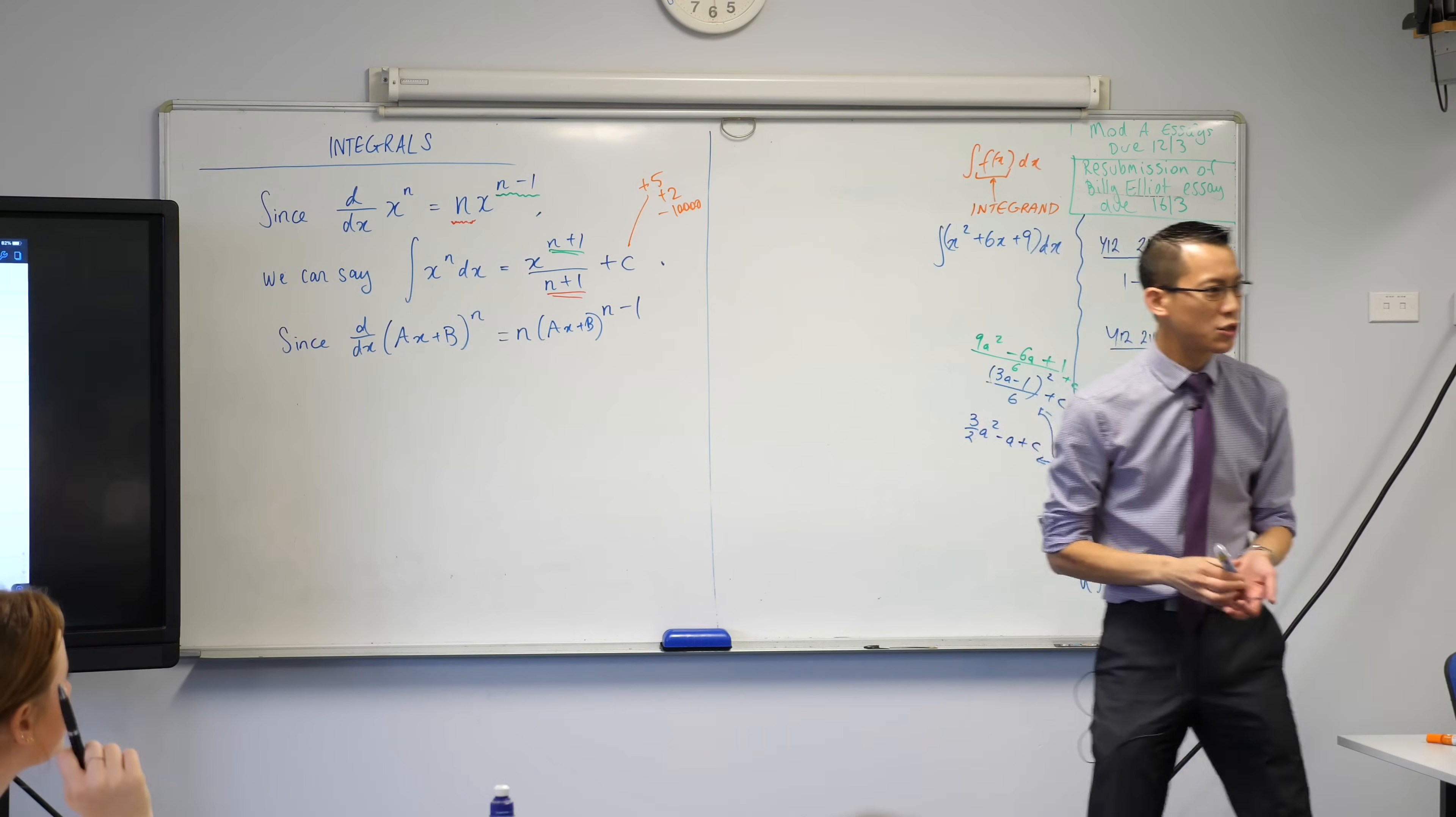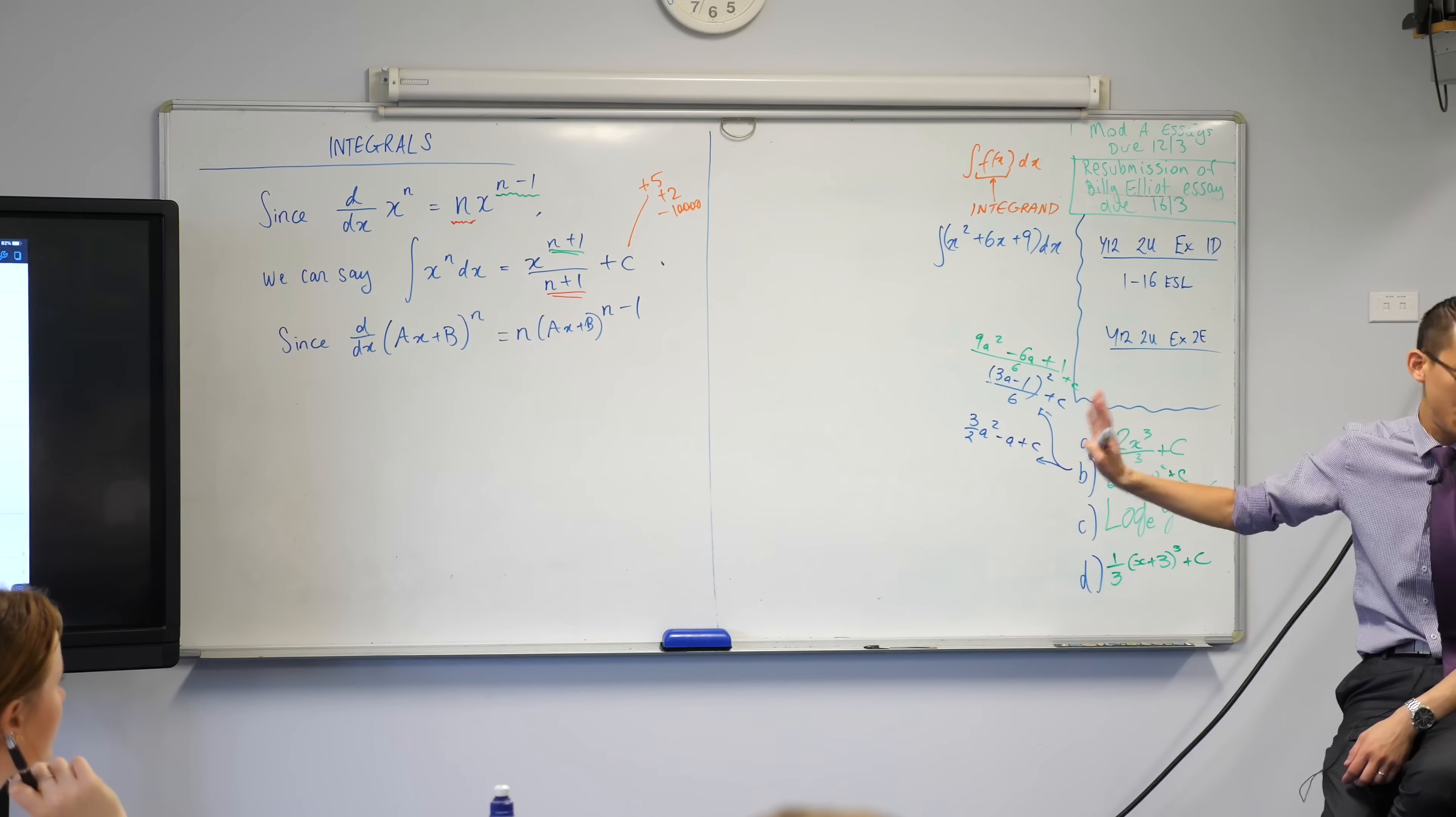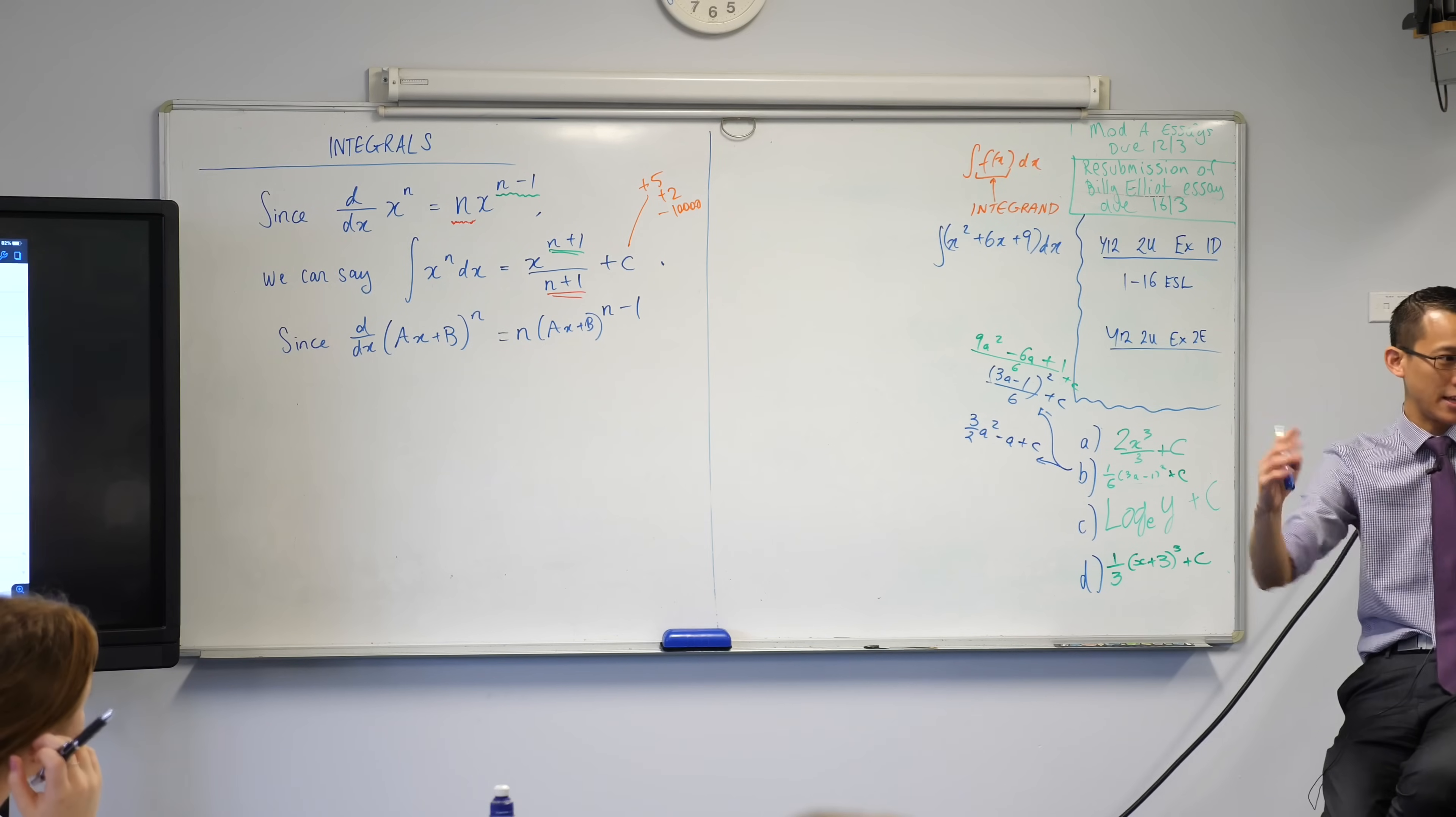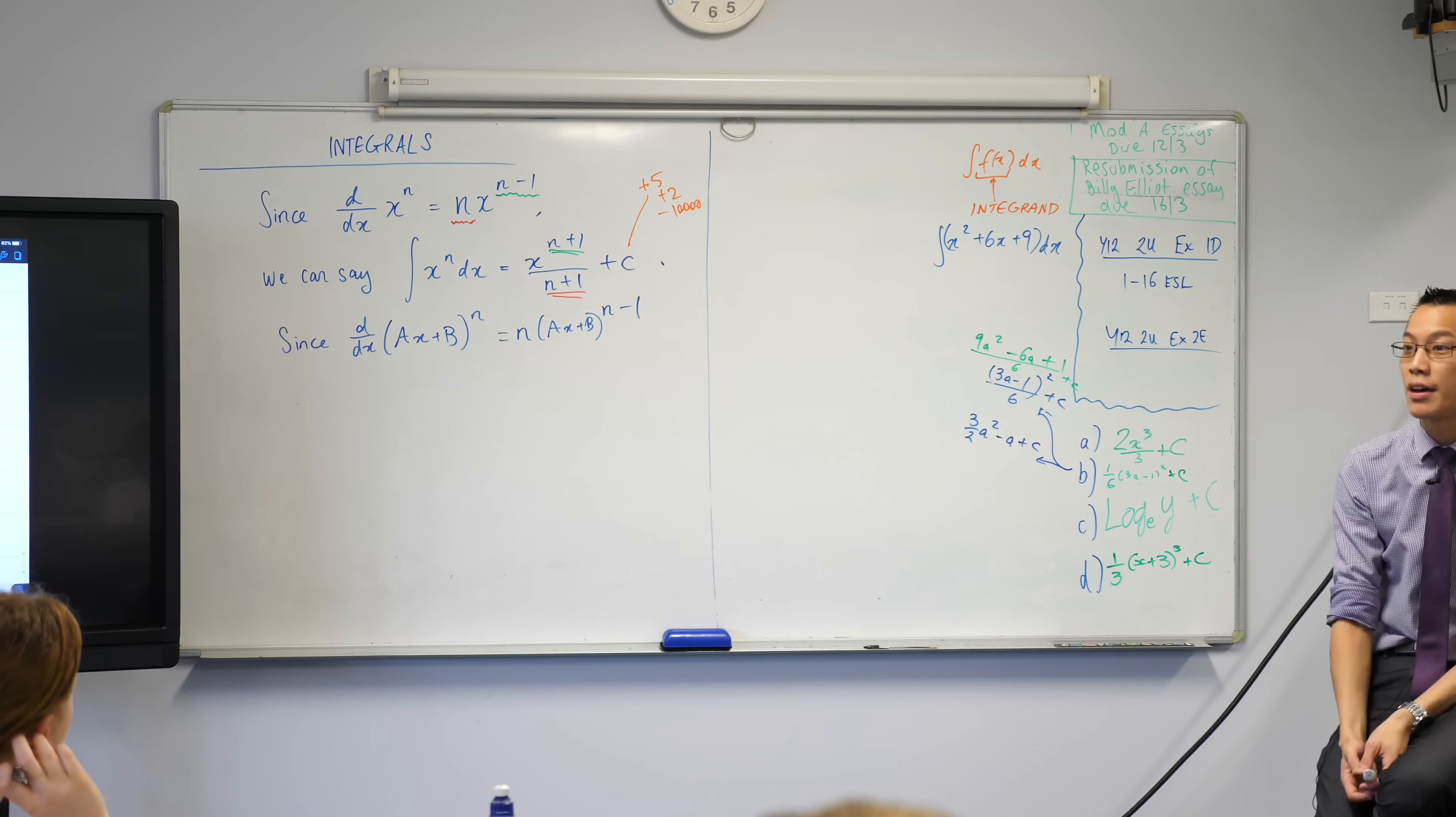Now, in chain rule, you guys know there's two parts, right? There's the inside and the outside. Which one have we done so far? This is the outside. There's a thing, a big fat thing, it's been raised to a power. We've dealt with that. Now we're going to deal with the inside. What is the inside derivative?